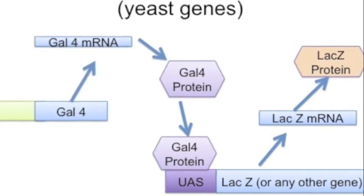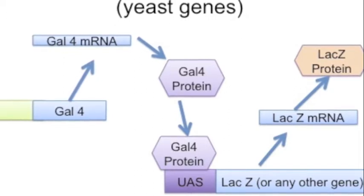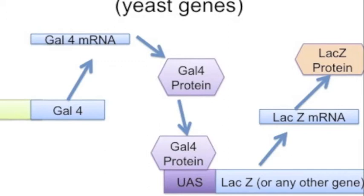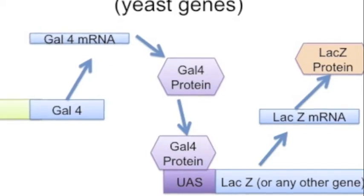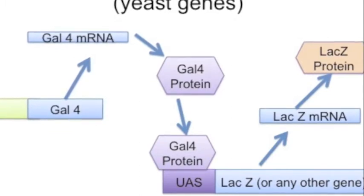The Gal4 produces an mRNA that produces a protein that leads to gene expression. We can then link the UAS to just about any gene to get expression of that gene. In this particular case, UAS is linked to the LacZ gene, which will produce beta-galactosidase.